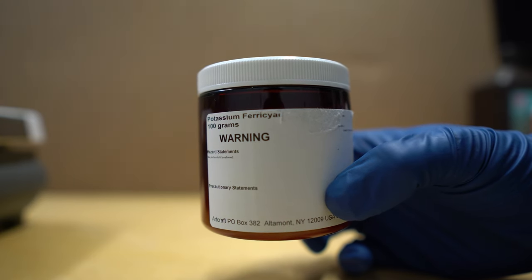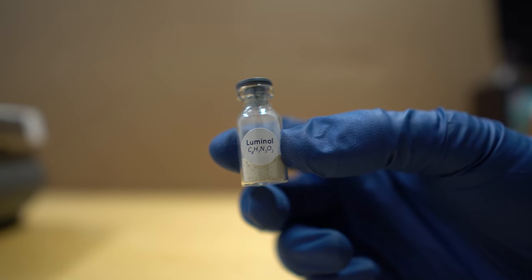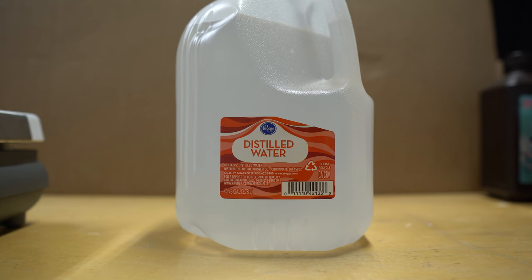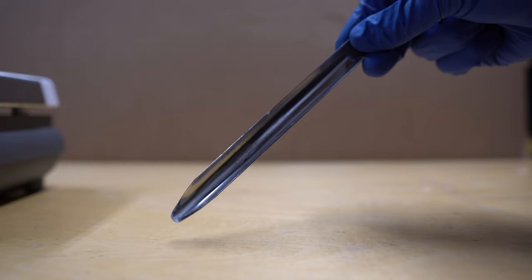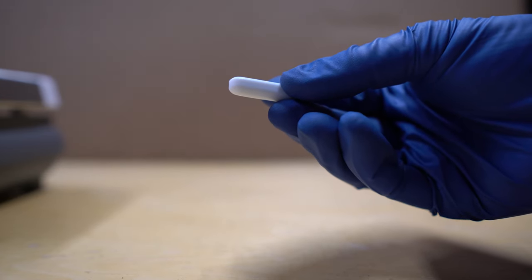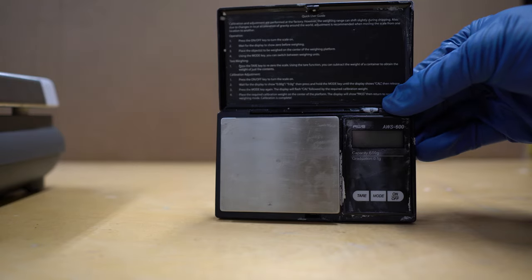You also need some potassium ferricyanide, some luminol because that's like the main thing of it, distilled water, two 500ml beakers or whatever you want to use, a scoop, and a stir bar. You also need a hot plate. You can kind of see it on the left. And a scale too. Scale would probably help.